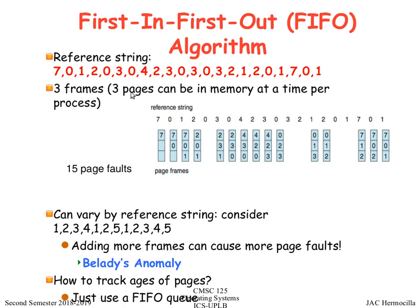All in all, given 3 frames and this reference string, FIFO produces 15 page faults. Is this optimal? No. FIFO also suffers from Belady's Anomaly: the typical behavior is that as you increase the number of frames, page faults decrease. But with FIFO using certain reference strings, adding more frames — say going from 3 to 4 — can actually increase the number of page faults, which is the opposite of expected behavior.